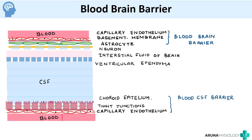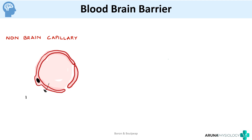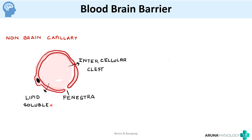Now we'll see the constituents or components of the blood-brain barrier — how the capillary endothelial membrane, basement membrane, and astrocytes produce this barrier. Consider a non-brain capillary found elsewhere in the body: liposoluble substances can easily diffuse out, there are fenestrated capillaries with small openings called fenestrae, intercellular clefts, and transcytosis is also possible. So there are many methods by which non-brain capillaries exchange substances with the exterior.